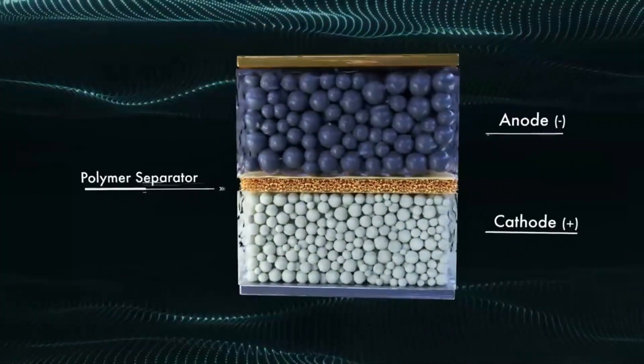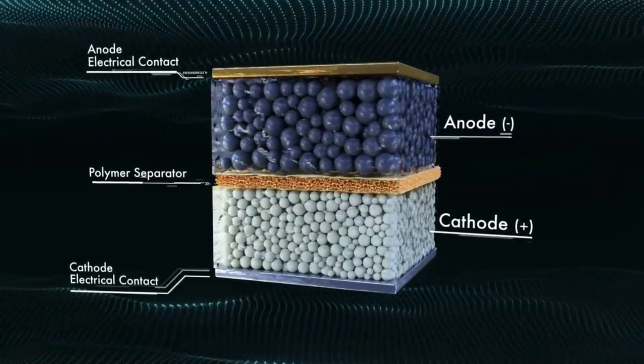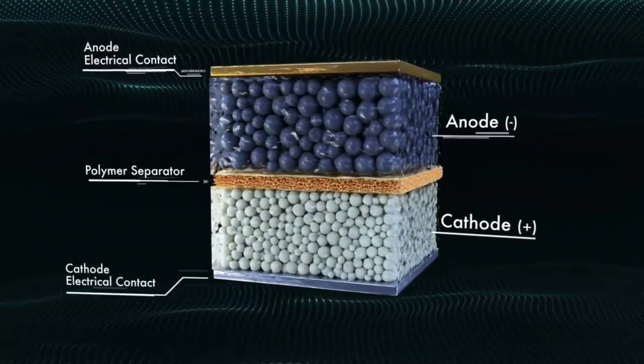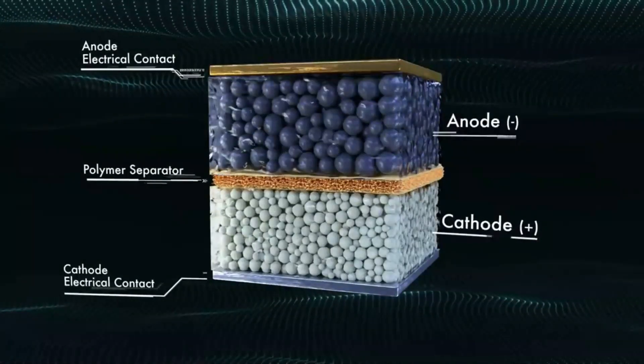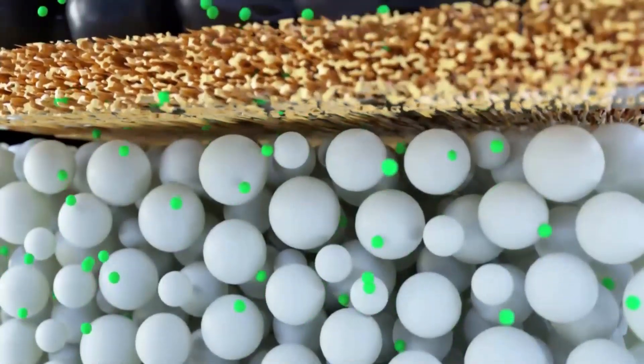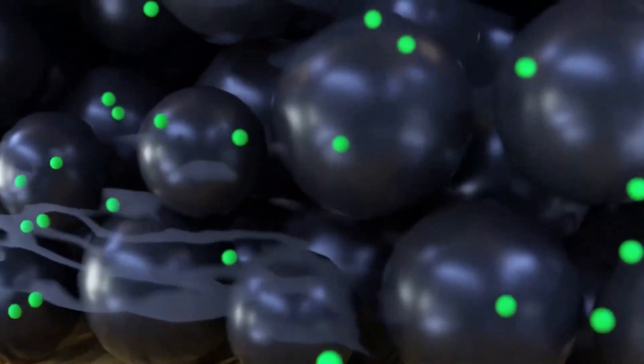The separator acts as a mechanical separator between the anode and cathode and acts as an insulator and an electrolyte, which is the medium through which ions move, an organic liquid containing lithium salt. By functioning as a connecting connection between the cathode and anode, the electrolyte fills the entire space inside the cell, soaks the electrodes, and allows the lithium ions to travel.